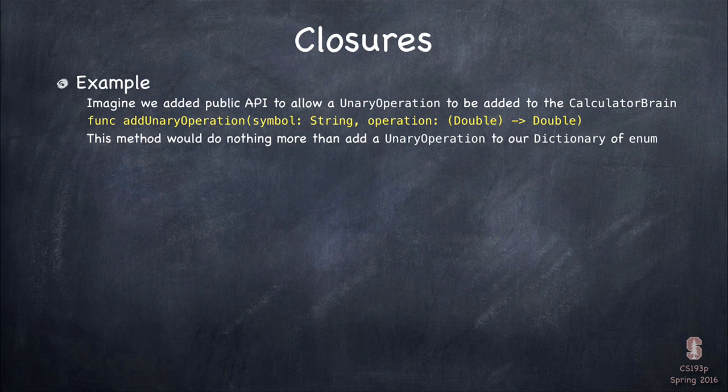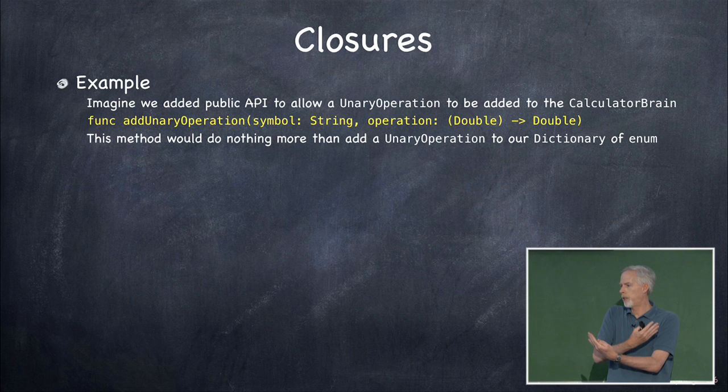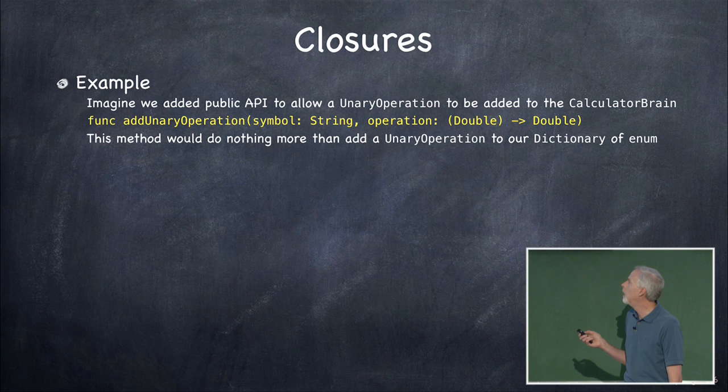What's the problem with that? Generally it works fine, except for memory cycles. A closure pointing to an object, and that object pointing back to the closure — they have strong references to each other. How can they ever leave the heap? They can't, because they're always maintaining strong pointers to each other. Unless you set one of those pointers to nil, there's no way they can stop pointing to each other.